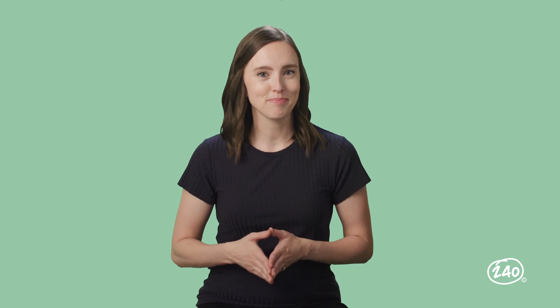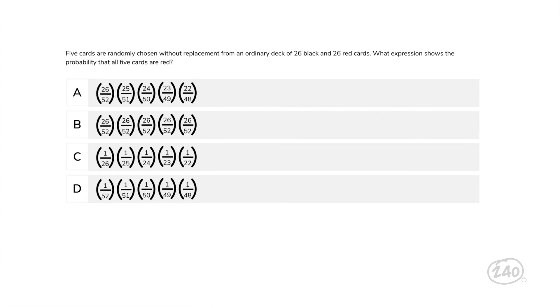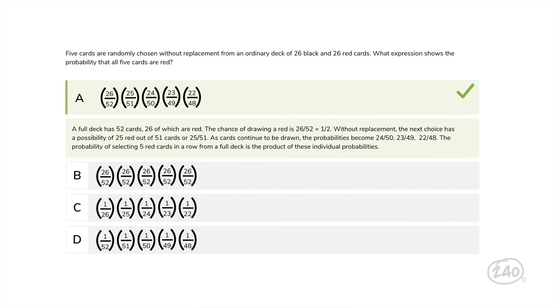Ready for a probability question? Five cards are randomly chosen without replacement from an ordinary deck of 26 black and 26 red cards. What expression shows the probability that all five cards are red? The first time we pull a card, we have a 26 out of 52 chance of it being red. So right away we can eliminate choices C and D. When we go to pull our second card, the number of red cards and total cards in the deck has decreased. So now we have a 25 out of 51 chance of pulling a red card. Choice A is correct. Each time a card is drawn, the probability changes.